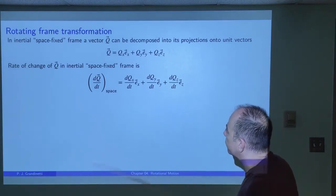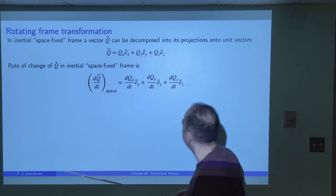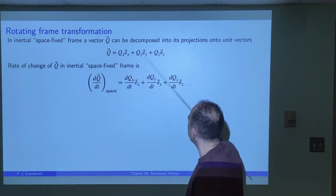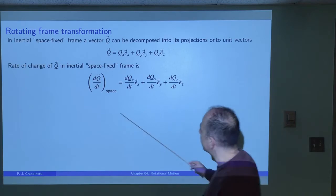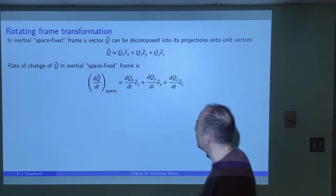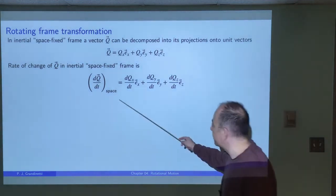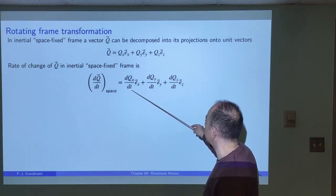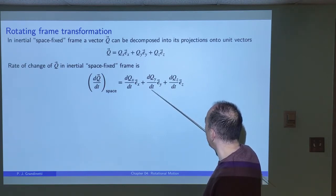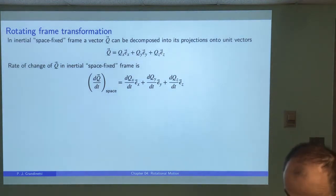Imagine some arbitrary vector Q in an inertial space-fixed frame. We write out the vector with its components, and if we want to take the derivative with respect to time — the rate of change of that vector in the space-fixed frame — we just take dQx/dt times ex, dQy/dt times ey, and dQz/dt times ez. And that would be fine.